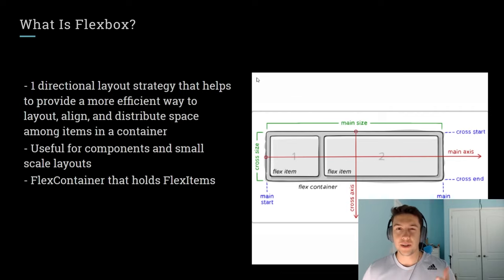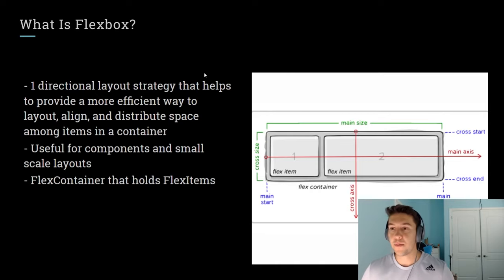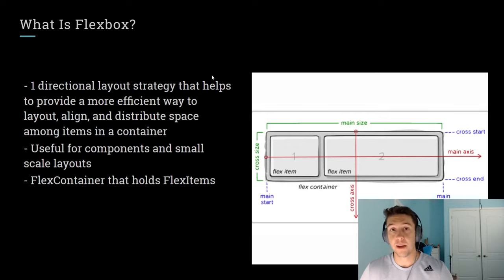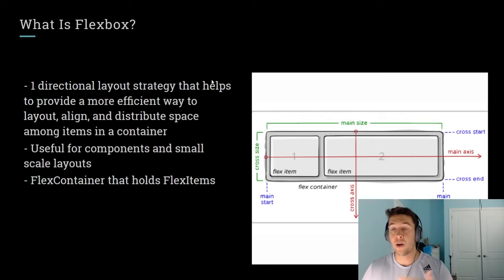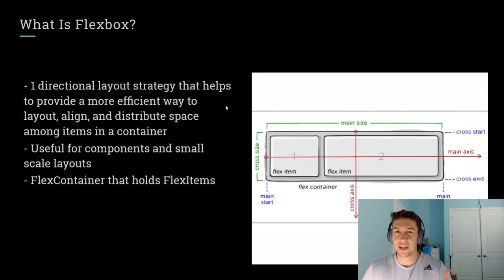Just as a quick note, in this presentation we're looking at CSS Flexbox and CSS Grid, and there's a little bit of difference between the CSS Flexbox and the Material UI Flexbox implementation. For example, CSS Flexbox allows you to go in the row and column direction, while Material UI's implementation only allows you to go in row and row reverse. But we'll get back to that later in the video.